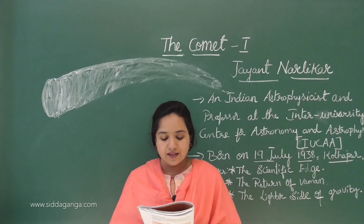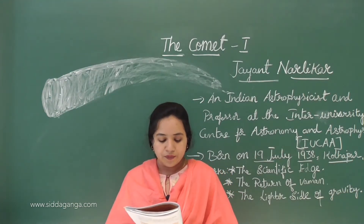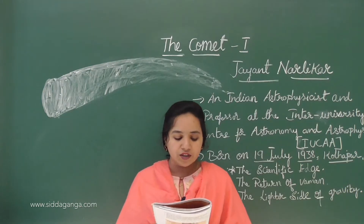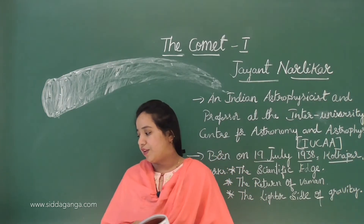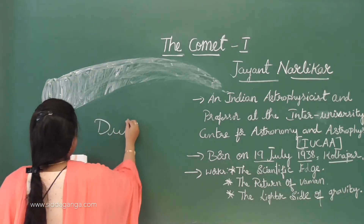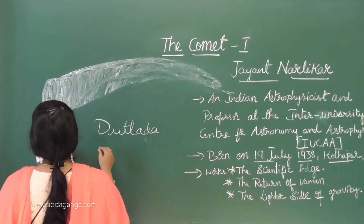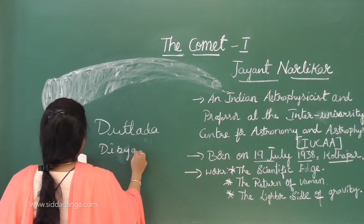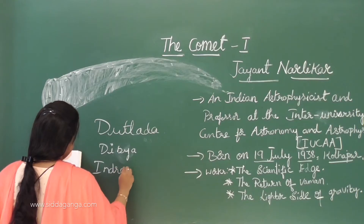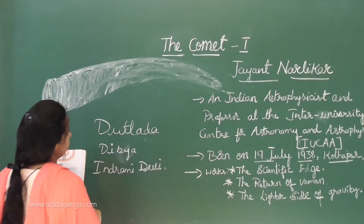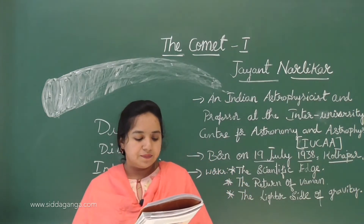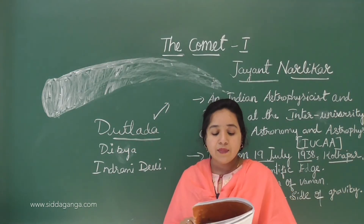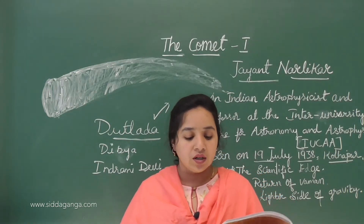The characters in this lesson are: Dattada — an amateur scientist; Dibya — his telescope; and Indrani Devi — Dattada's wife. Amateur means a person attached to a pursuit without pursuing it professionally. So Dattada is a scientist by hobby, not professionally.